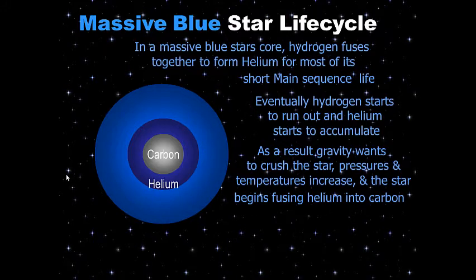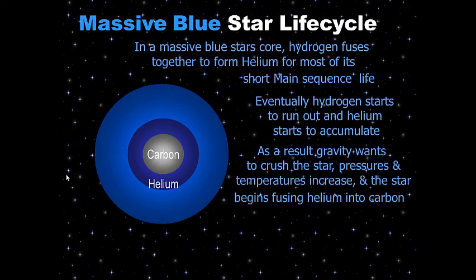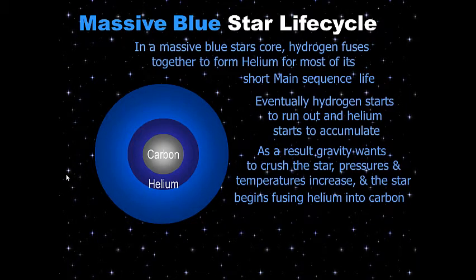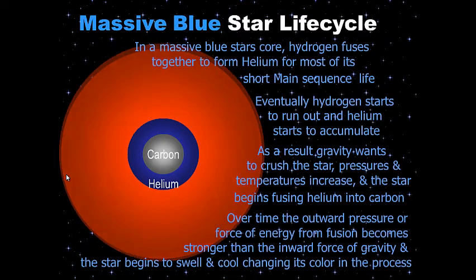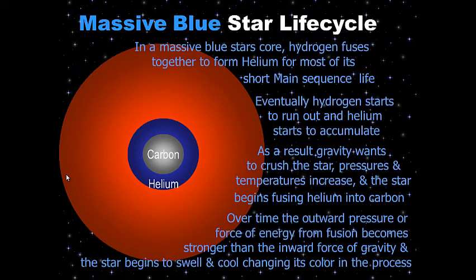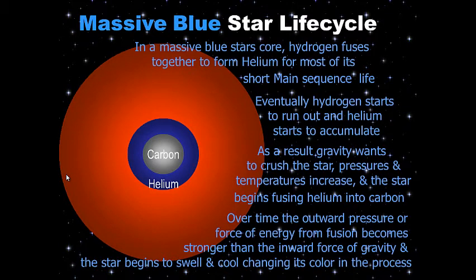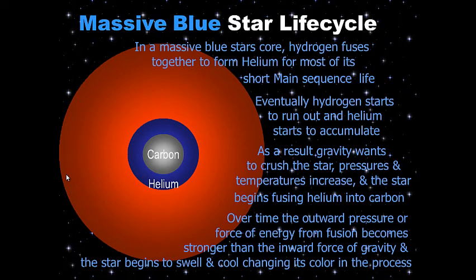The temperatures increase and the star begins fusing helium into carbon — smashing helium atoms together to make the next heavier element, carbon. This is still fusion and energy is still released. Over time, the outward pressure or force of energy from fusion becomes stronger than the inward force of gravity, and the star begins to swell and cool, changing its color in the process. The star is no longer in the main sequence phase — it is getting near the end of its life.